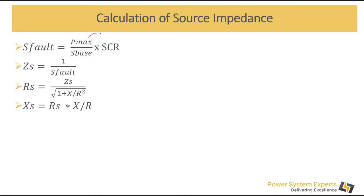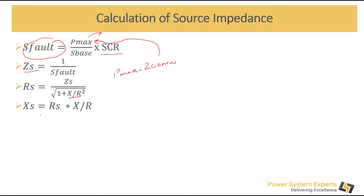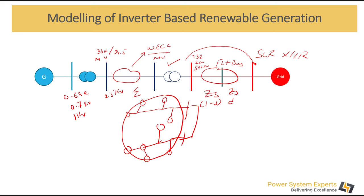Now, how is this source impedance calculated from your SCR and X/R values — typically provided by your utility? First, you need to know your plant maximum capacity. For example, if I have a renewable plant of 200 MW, P_max becomes 200 MW. Then you provide your base voltage and SCR value — this gives you your fault MVA. You divide the fault MVA by 1 to get Z_source. Then divide Z_source by the square root of (1 + (X/R)²) to get R_s, and multiply R_s by X/R to get X_s.